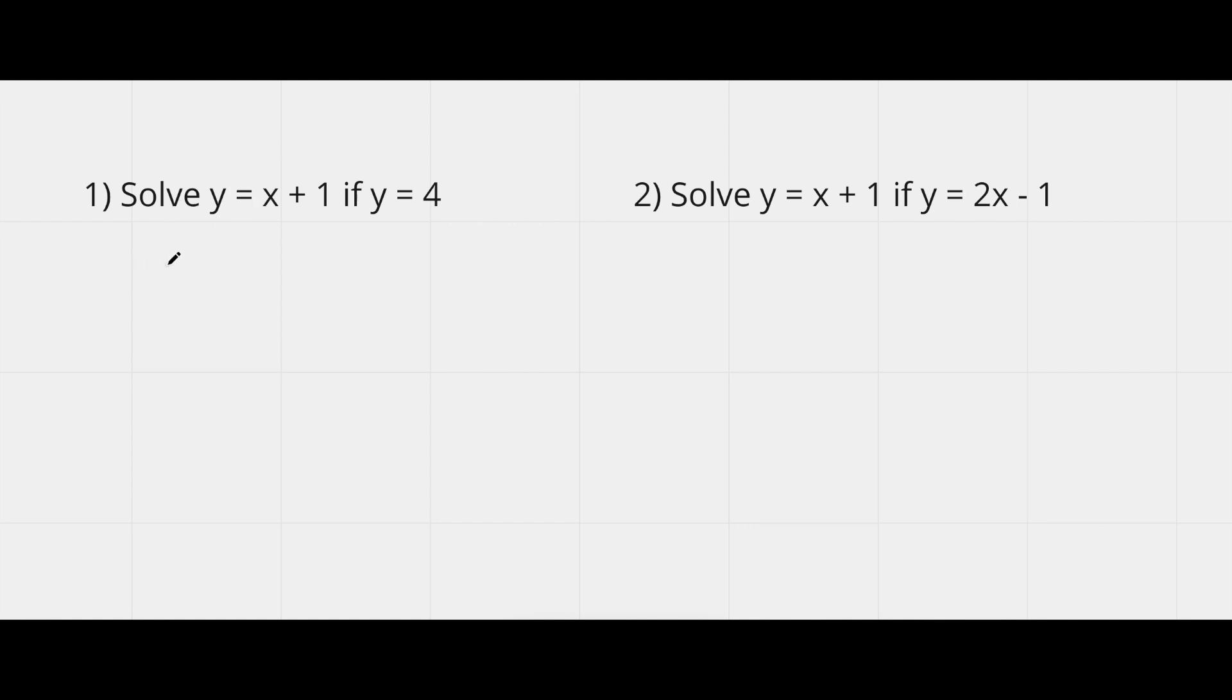So solve y equals x plus one if y is equal to four. So that means we replace the y with a four equals x plus one. And now we can move the plus one over to the other side to make it minus one.